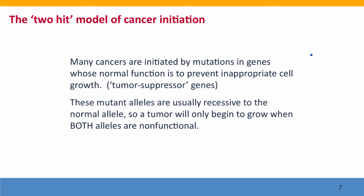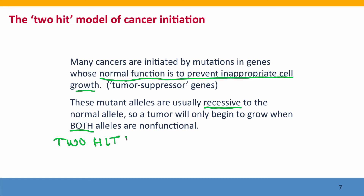The two-hit model of cancer initiation says that many cancers are initiated by mutations in genes like the retinoblastoma gene — genes whose normal function is to prevent cell growth. These are what are called tumor suppressor genes. But because these mutant alleles are usually recessive to the normal allele, a tumor is only going to begin to grow if both alleles of this gene are non-functional. That's the two hits — the gene has to take two hits before a tumor will develop, a hit in each allele.